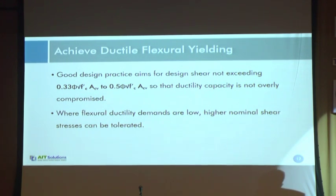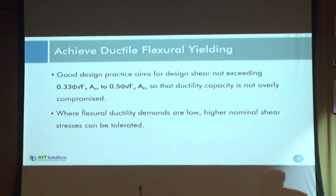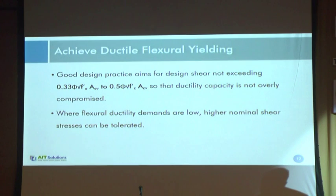To achieve ductile yielding in flexural mode, we should also reduce the shear stresses in the shear wall. Generally in ACI 318 chapter 21, there is a limit for the maximum shear capacity check — 0.83 times the square root of f'c (in MPa units). But to improve ductile flexural yielding, we should limit shear to 0.33 to 0.5 instead of 0.83 to improve ductility. For locations where flexural ductility demands are low, we can use the higher limits.